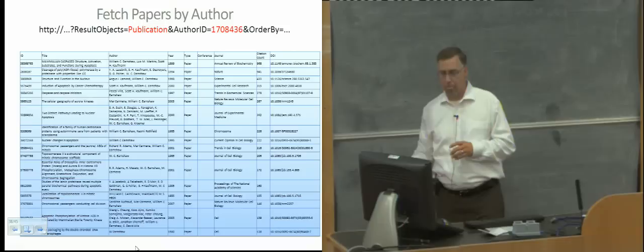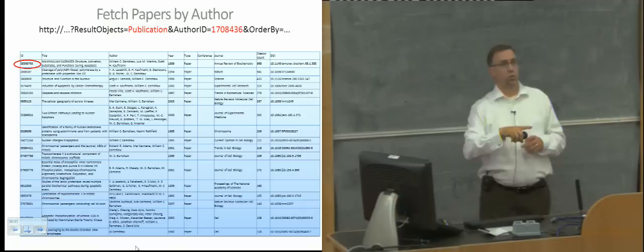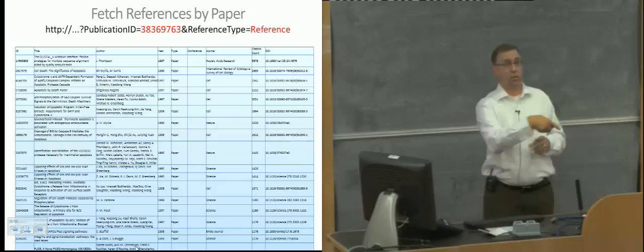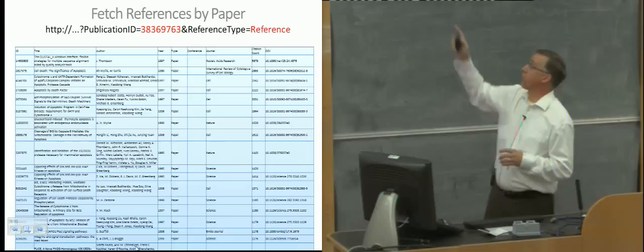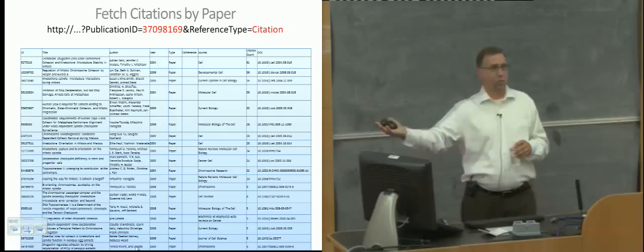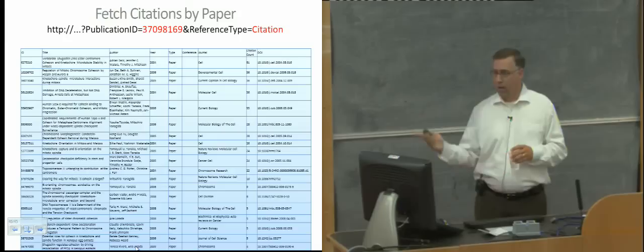I can then take the ID of one of those records and travel forward and backward through time. For a given publication ID, I can ask for a list of references — the papers that paper cited — and by changing the reference type to citation, get all other documents in our system that have cited that publication. So this is a way of traveling backwards and forwards, pulling data out of our system. Send us an email if you want to get an app ID.